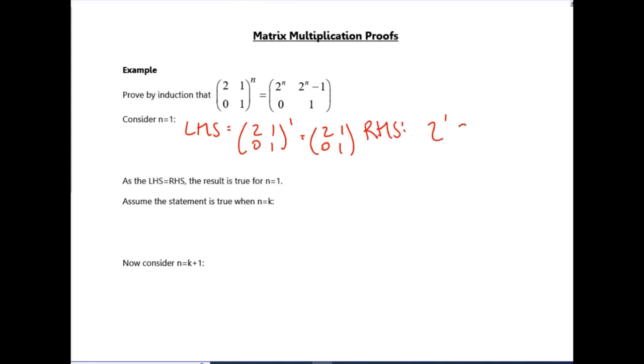So I'm going to end to the right hand side and get 2 to the 1, 2 to the 1 minus 1, 0, 1, which gives me 2, 1, 0, 1, which is the same matrix.